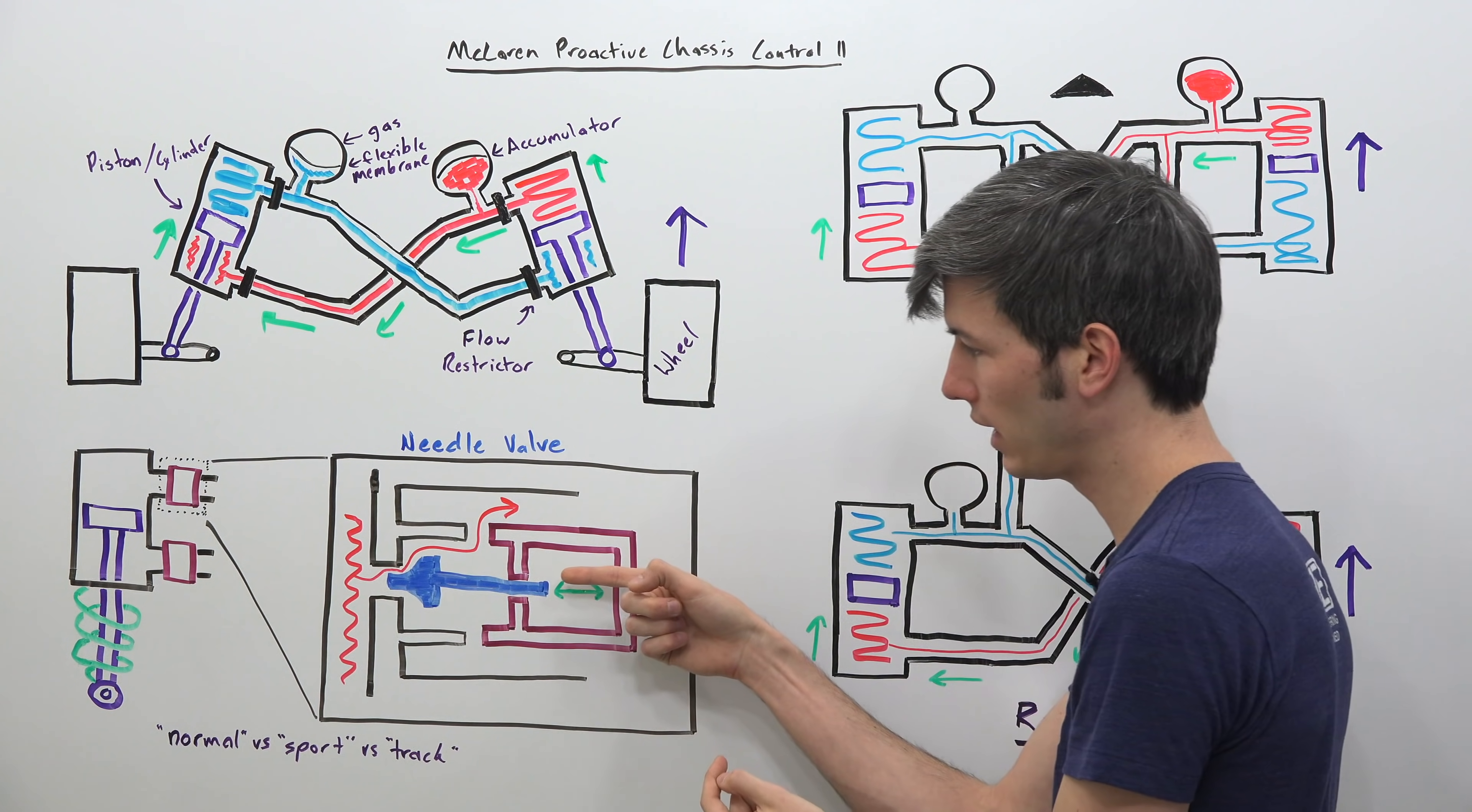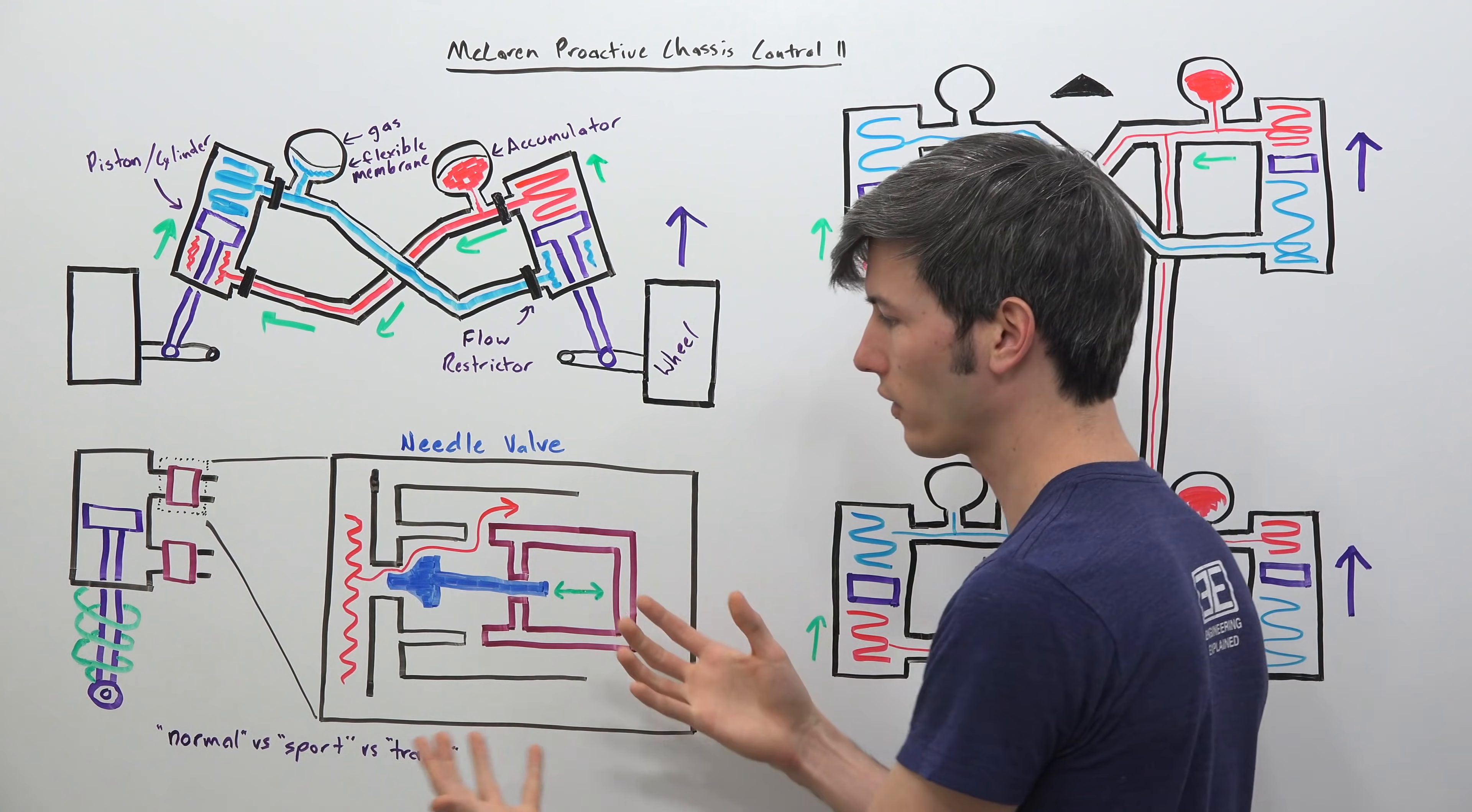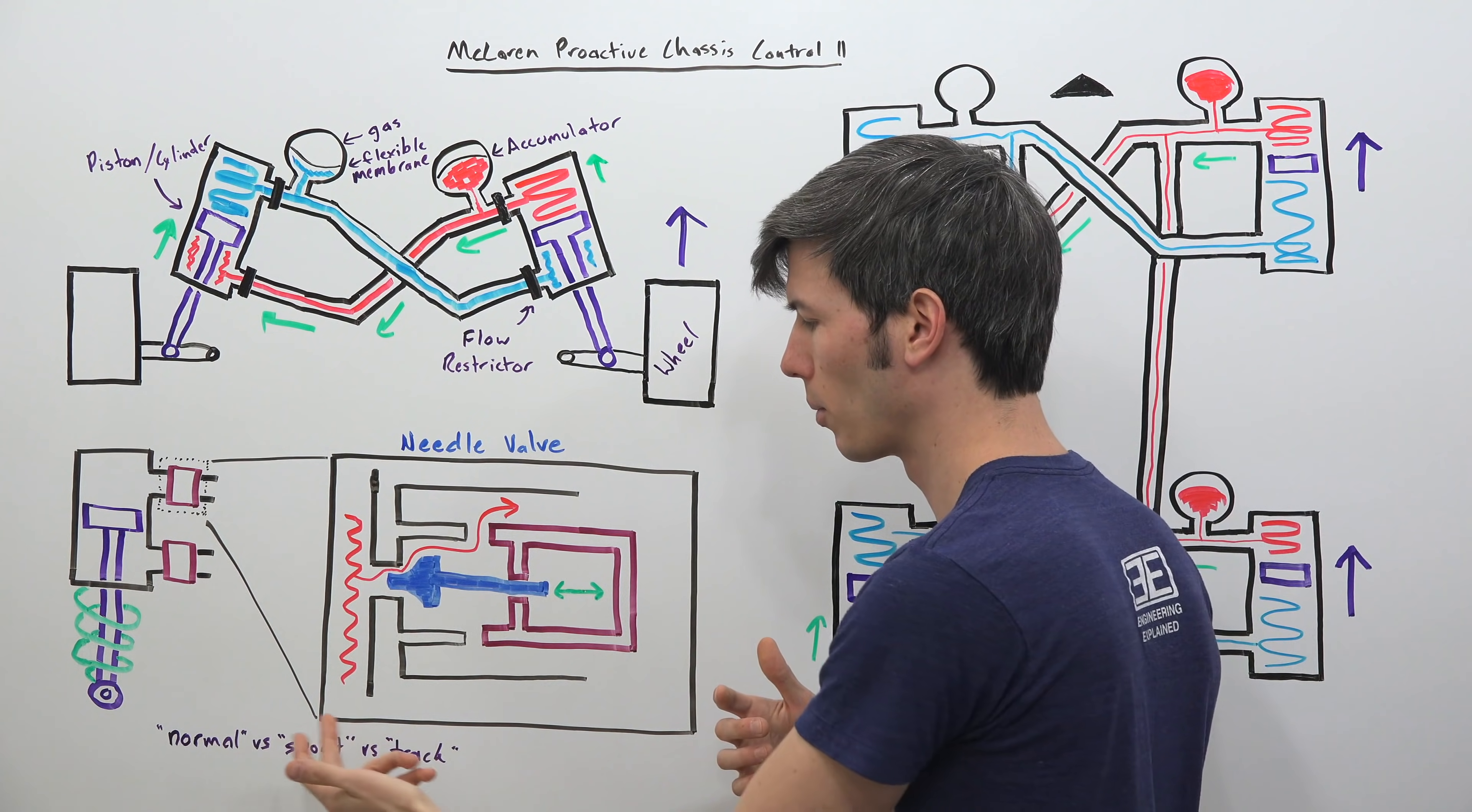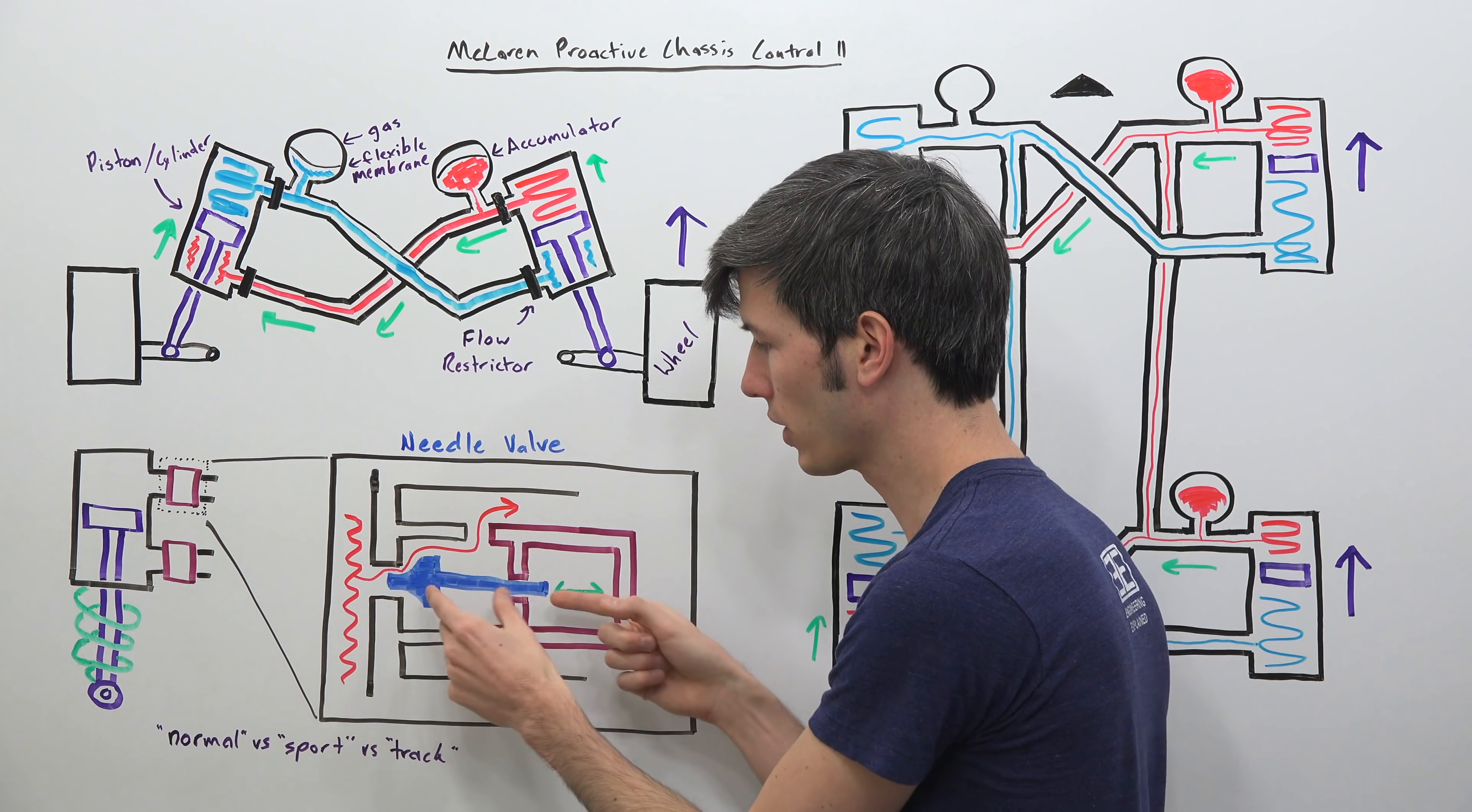And so if you force that needle valve closer you restrict the amount of fluid flow and if you pull that needle valve back you allow for much easier fluid flow. So that's going to be their differentiator between normal, sport and track.